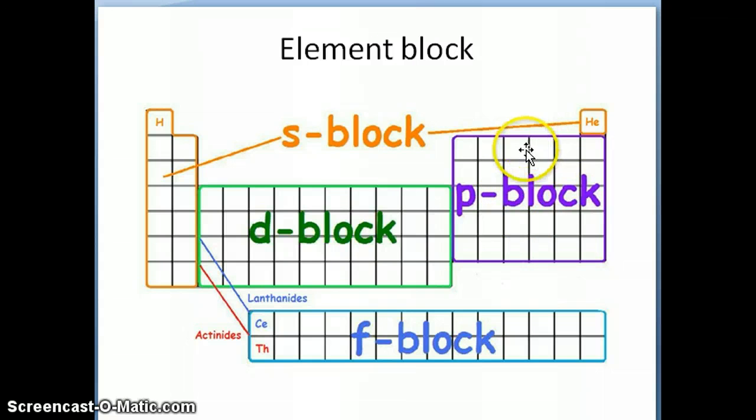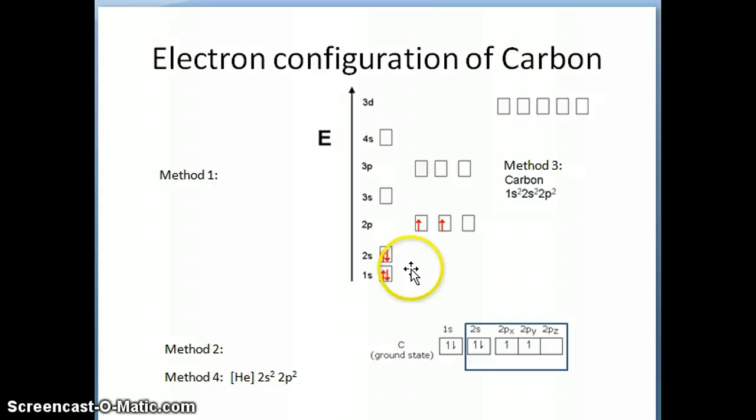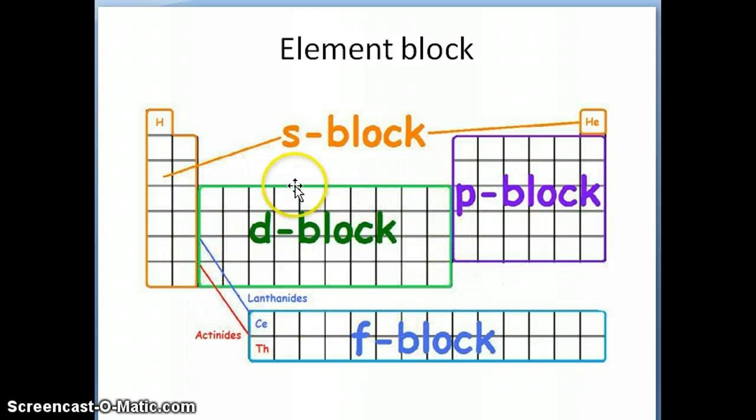This one is called the P block elements because their valence electrons are in a P orbital. We just did an example of this, which is carbon. Carbon is located somewhere here, and has the last valence electron in the P orbital. Then you have this transition metal region right here. All of their electrons are in the D block. And if you remember that the periodic table has a series of 14 elements here, these 14 elements actually all belong in the F block. Usually they're written at the bottom of the main periodic table. The top row is called the lanthanides, the bottom row is called the actinides.